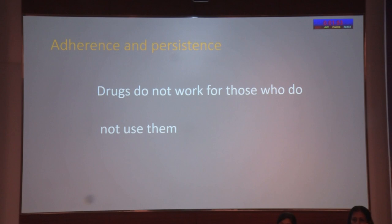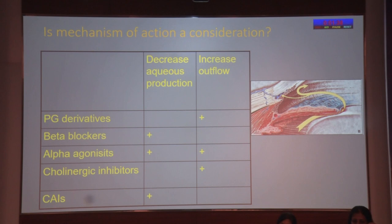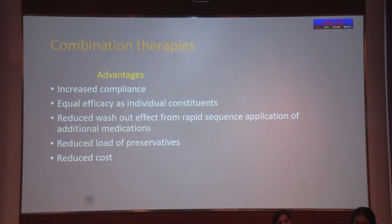We need to remember that drugs do not work for those who do not use them. For persistence by drug class, the PG analogs score again — patients on latanoprost did better than those on beta blockers in maintaining their therapy. Regarding mechanism of action: pair drugs that complement each other — those which decrease aqueous production should be combined with those that increase outflow, either through the trabecular meshwork or the uveoscleral outflow pathway. The advantages of combination therapies include increased compliance, equal efficacy as individual constituents, reduced washout effect from rapid sequential application of medications, and reduced load of preservatives. We now have a large armamentarium of combination drugs available in India as well.